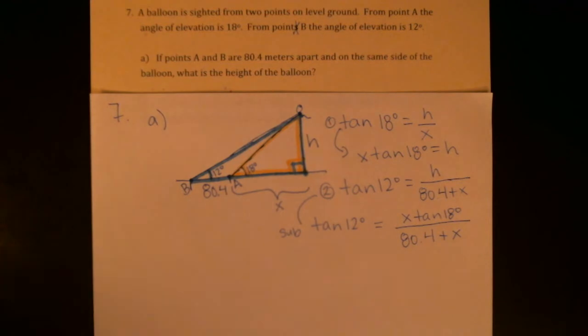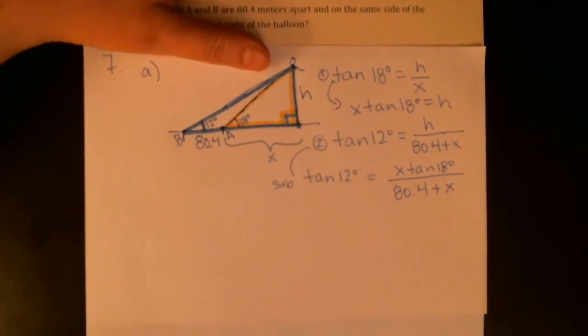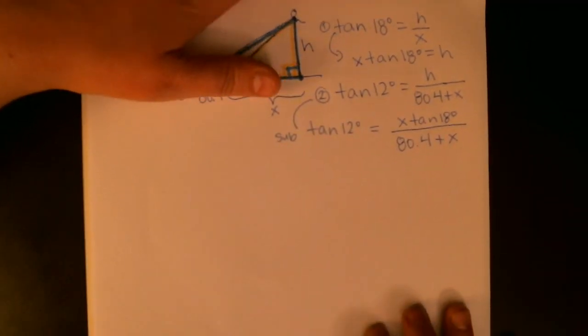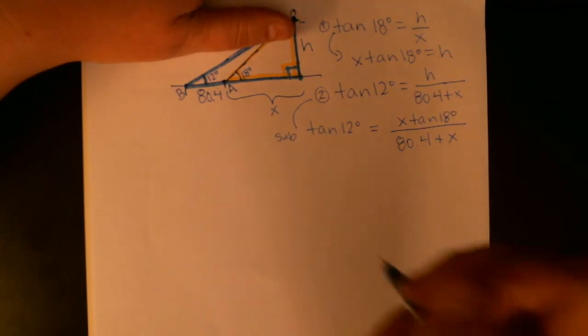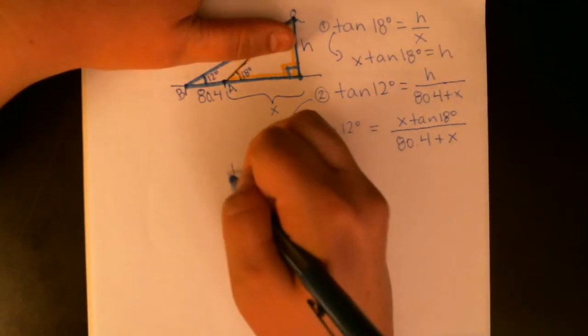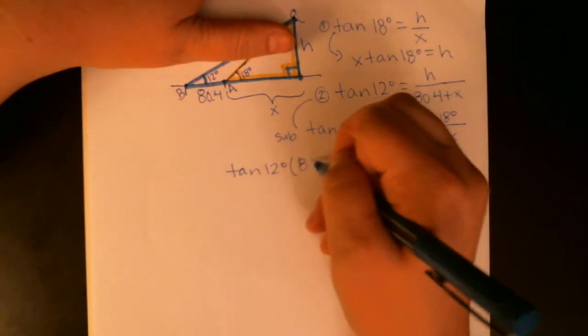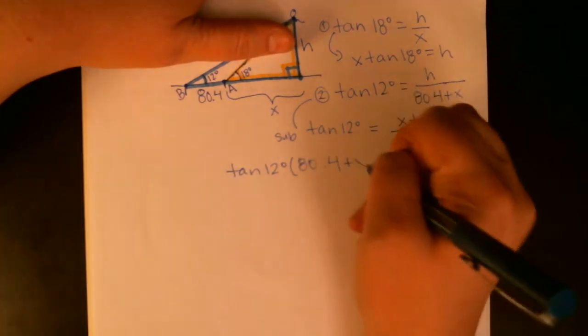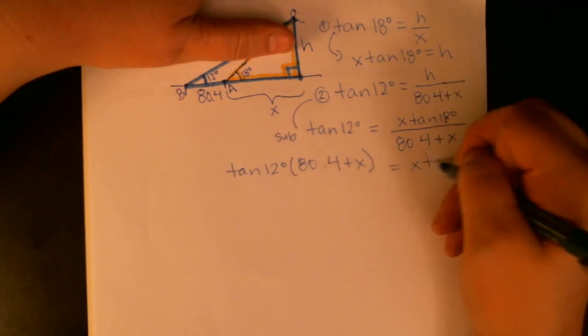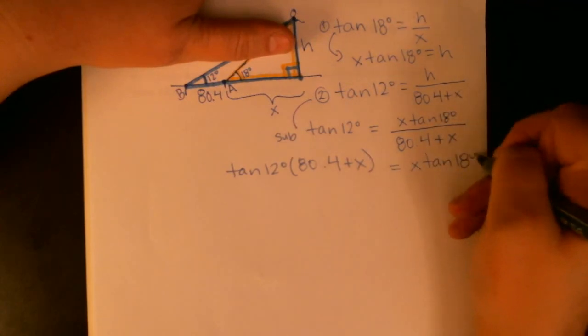It is a little messy, but you want to remember that tangent of 12 degrees and tangent of 18 degrees are just numbers. I haven't crunched through—I don't want to switch to an approximate now. I want that to be the last step when you're solving, but I can work on this without calculating those. So I'm going to clear fractions first, so I'll get tangent of 12 degrees multiplied by 80.4 plus x is equal to x times tangent of 18 degrees.